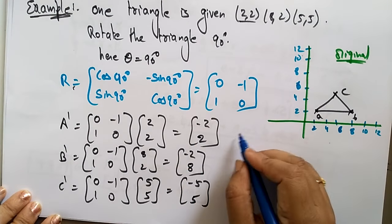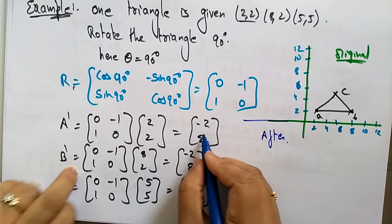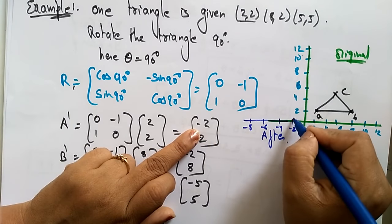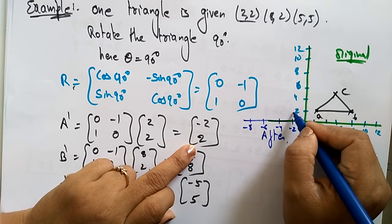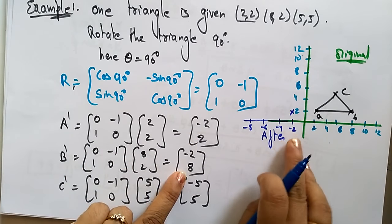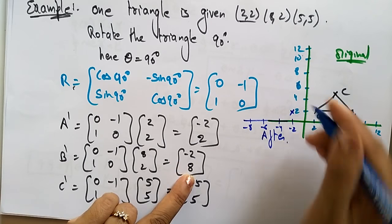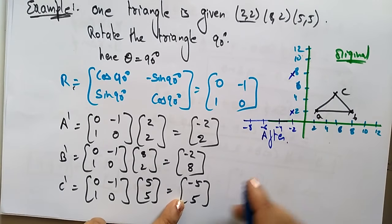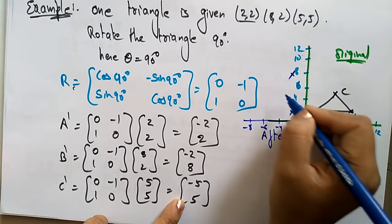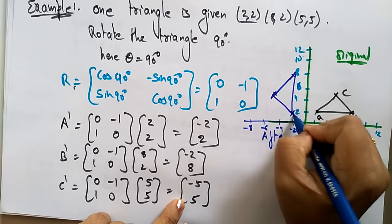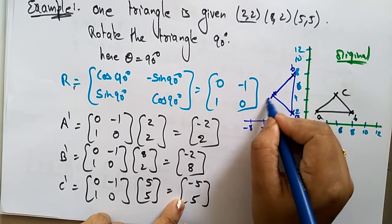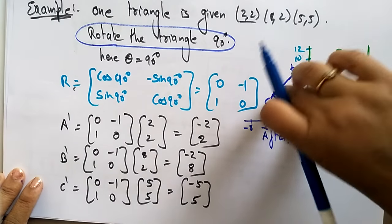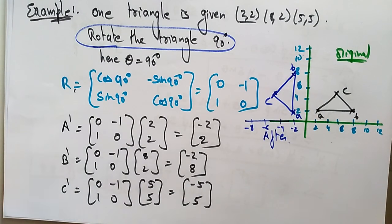Now plotting the rotated triangle: A' is at x = −2, y = 2; B' is at x = −2, y = 8; and C' is at x = −5, y = 5. This is the A value, this is the B value, and this is the C value. You can see how the triangle has been rotated 90 degrees — it comes out like this. So this is about rotation. Thank you.